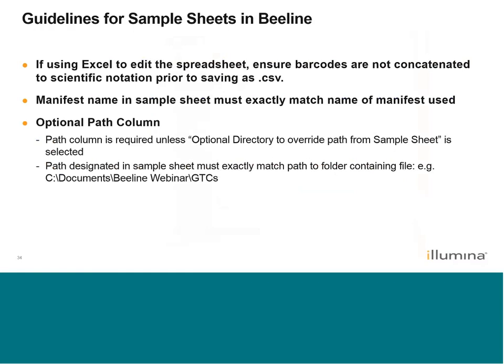Some simple guidelines for using sample sheets in Beeline: first, if you're using Excel to edit the spreadsheet, make sure the barcodes are not in scientific notation format prior to saving as a CSV, because if saved in that format, Beeline will not be able to read it. Also, the manifest name in the sample sheet must exactly match the name of the manifest used, because Beeline will use that exact name to find the manifest. And for the optional path column — it's required unless you use the option to navigate to where your GTC files are stored.